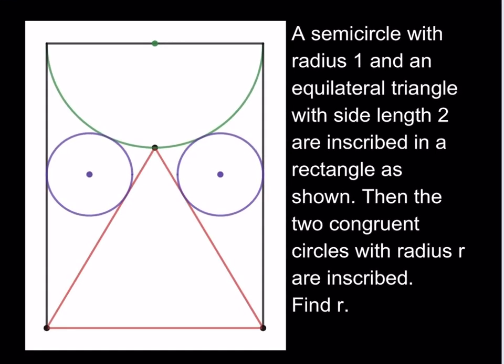Hello everyone. In this video we're going to be solving a geometry puzzle. A semicircle with radius 1 and an equilateral triangle with side length 2 are inscribed in a rectangle as shown. Then the two congruent circles with radius r are inscribed. Find r.